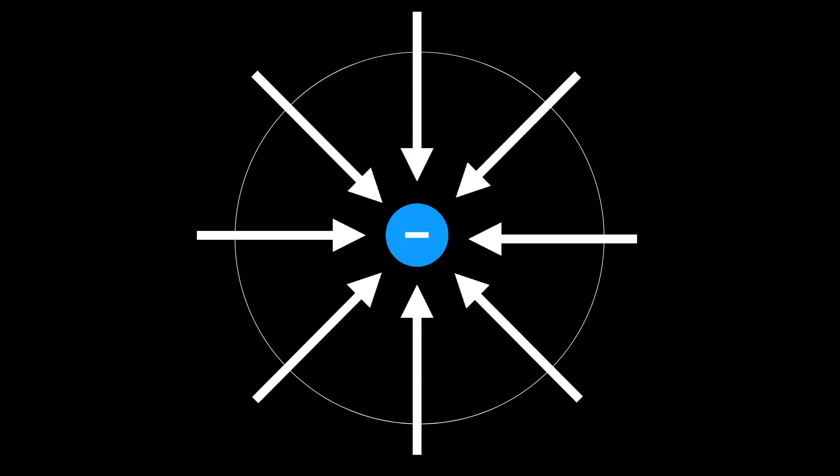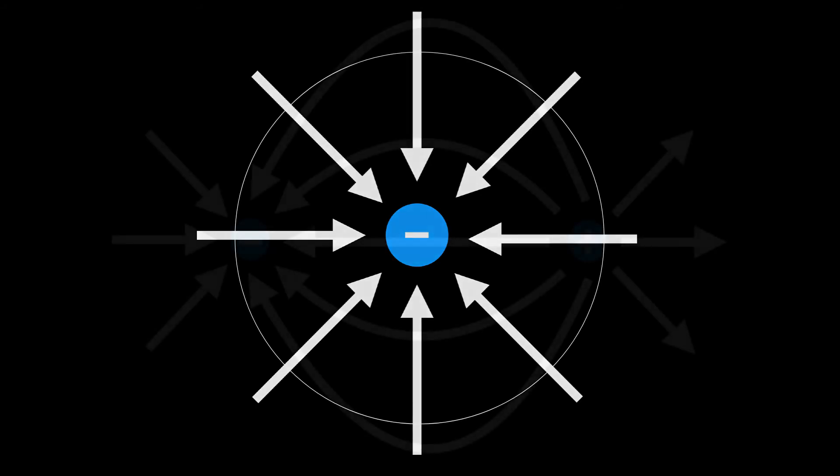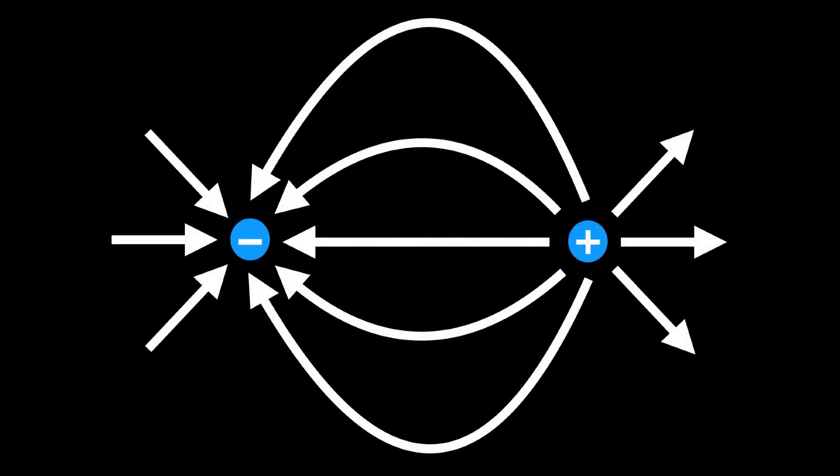All right, now we're going to look at something a little more intense. So now we're going to look at two point charges. We have a negative point charge and a positive point charge, equal magnitudes, different signs. It's called an electric dipole.